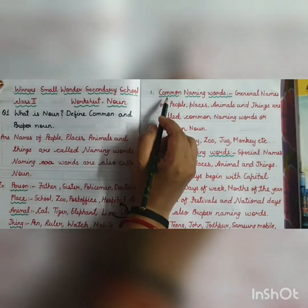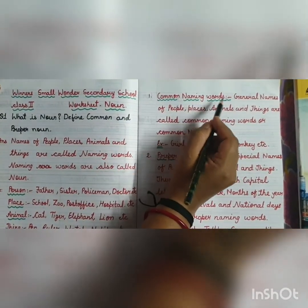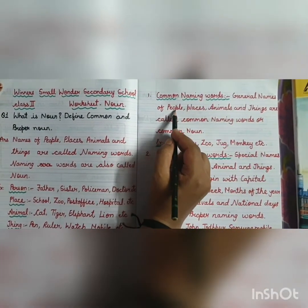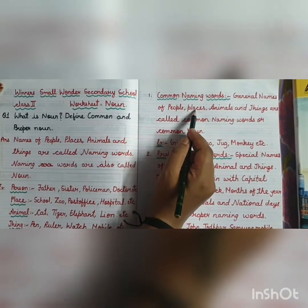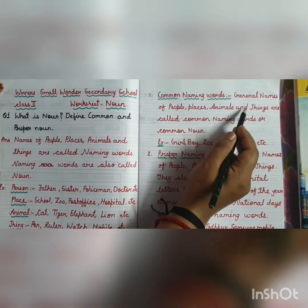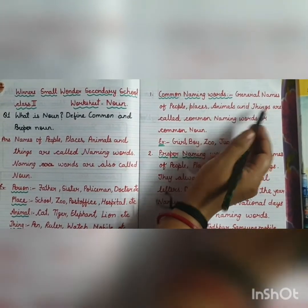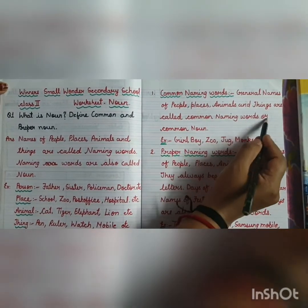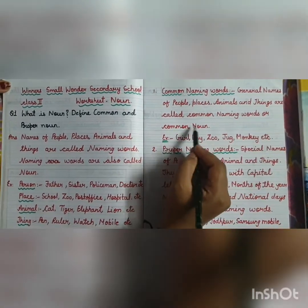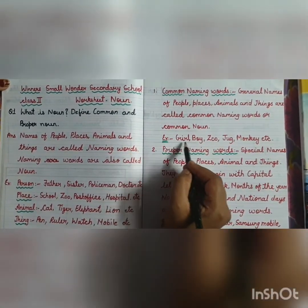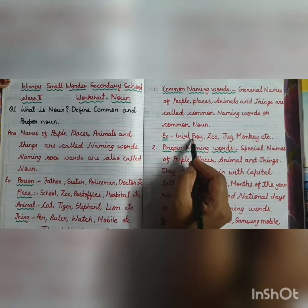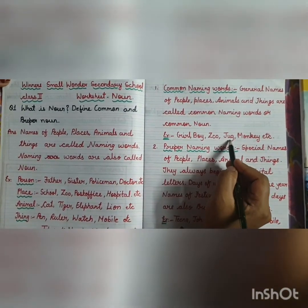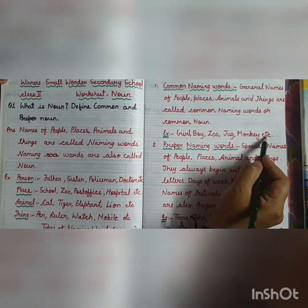First is common naming words. General names of people, places, animals and things are called common naming words or common noun. Example of people: girl, boy, zoo, jerk, monkey, etc.